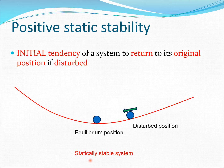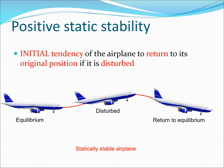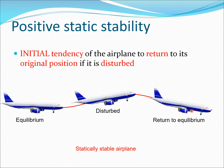Sometimes it is simply called a statically stable system. If we look at an aircraft situation, the aircraft is flying along in equilibrium — the forces at the CG are zero — and then it is hit by a gust, which is the disturbance. After the disturbance, the aircraft tends to get back to its equilibrium position. This is something you want in many aircraft. For example, if you are creating a small aircraft for a training mission, you would like it to be statically stable, or to have positive static stability.